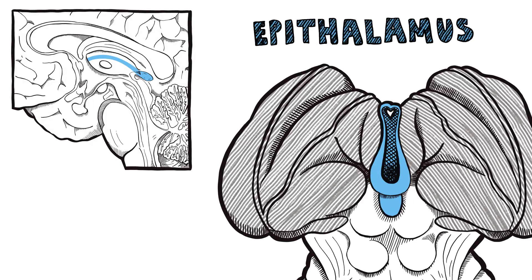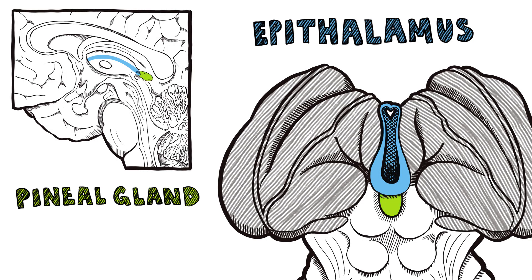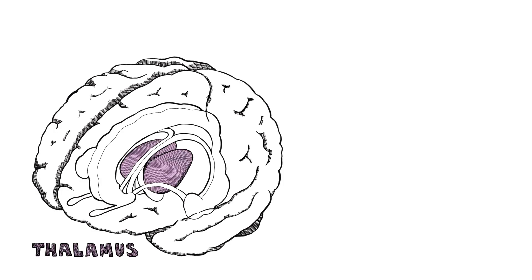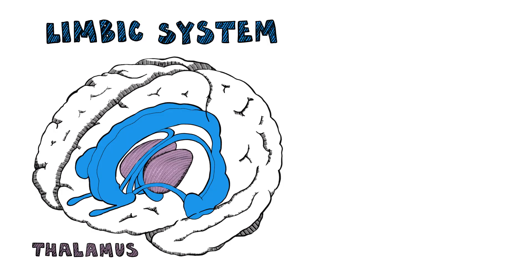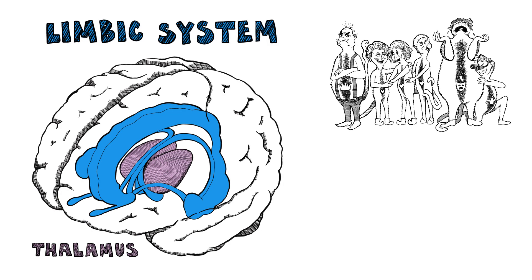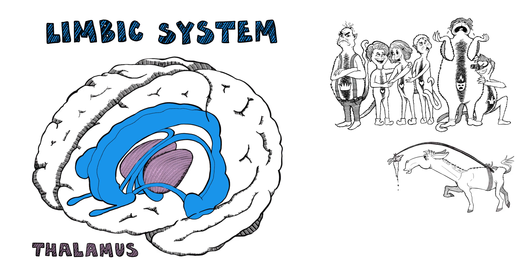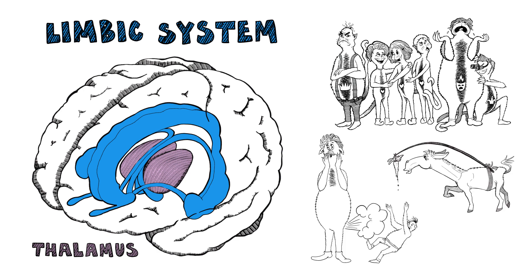The epithalamus connects the limbic system to other regions. Inside is the pineal gland for your melatonin secretions. Straddling the thalamus, the limbic system brings emotions like satisfaction, along with motivation, behavior, long-term memory, and olfaction.